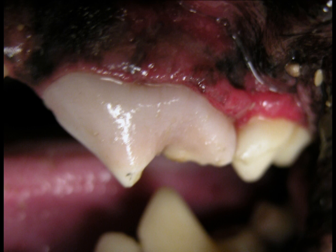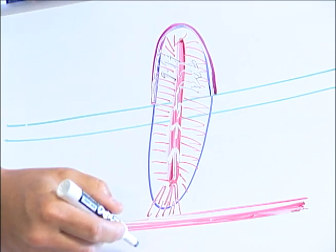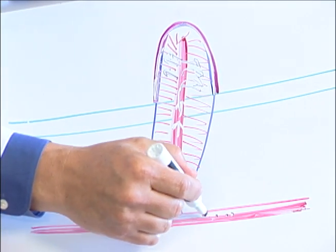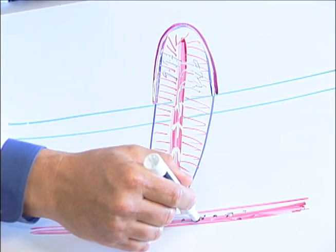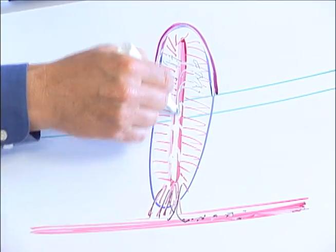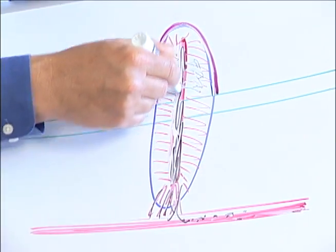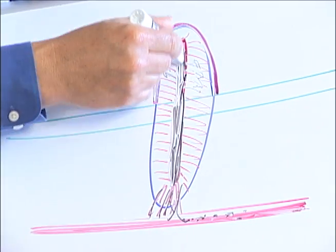Once the tooth is dead, bacteria within the bloodstream can gain access through what used to be the blood supply, thus infecting the tooth. At this point, this infected root canal system becomes a bacterial fortress, allowing bacteria to come out into the bone and create infection.